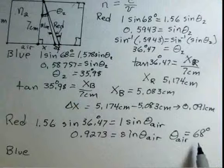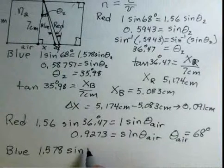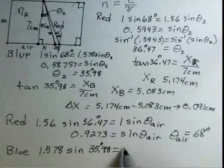For blue, the index refraction, 1.578, the angle of the blue light to its normal in the rectangle, inside the glass of the rectangle, 35.98 degrees. Again, in air, the index refraction is 1 for the blue light, just as for the red light. It's a slightly different one, but it's so little of a difference that we ignore that difference.